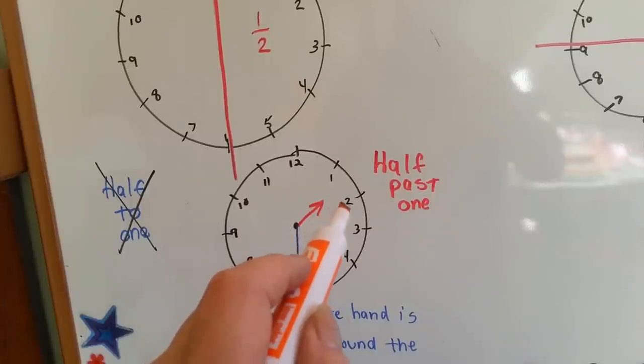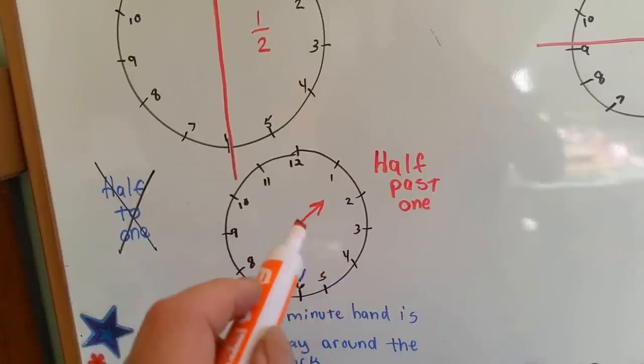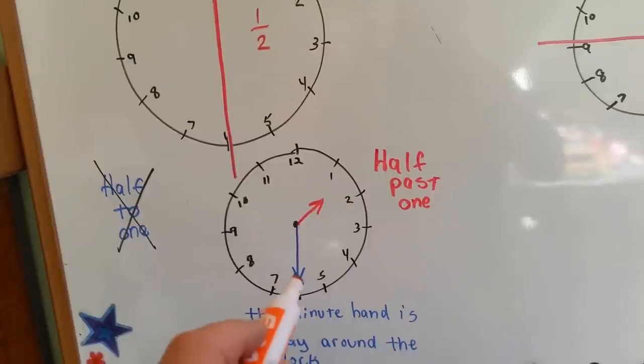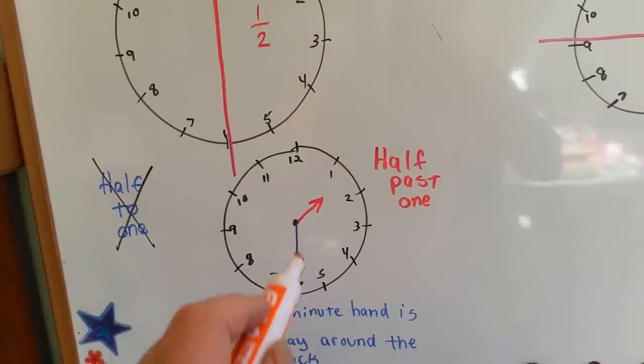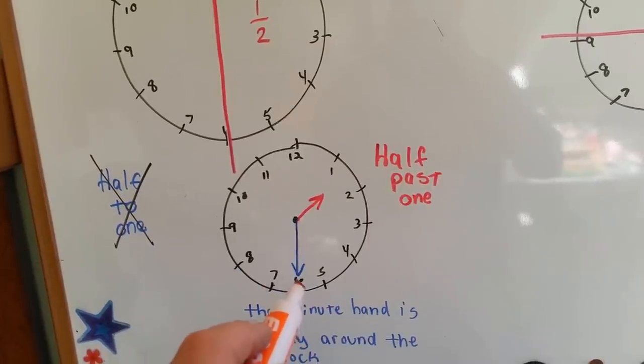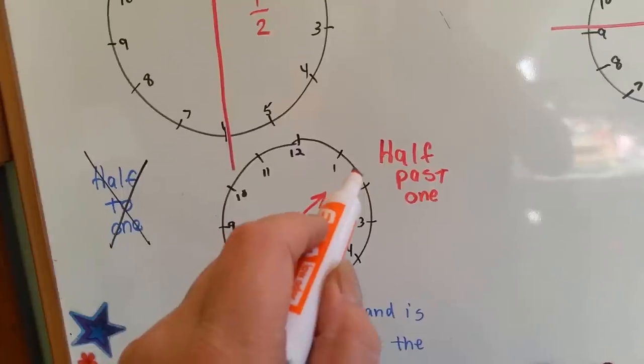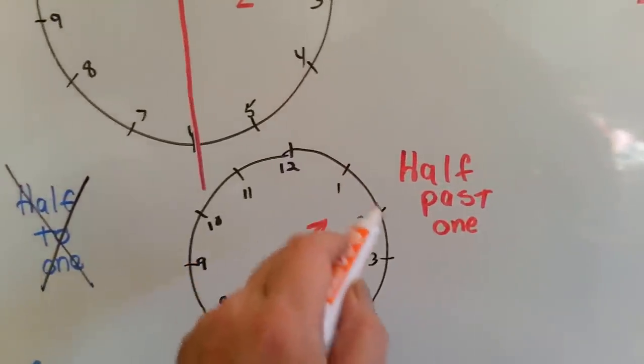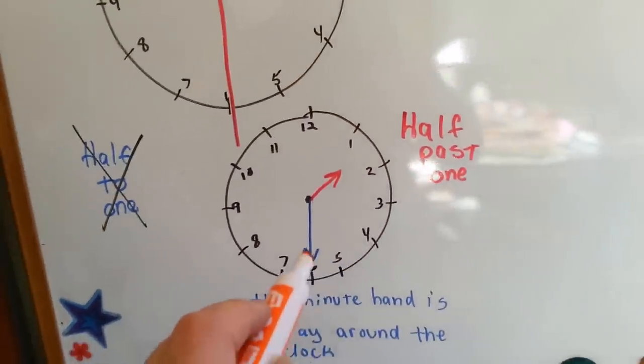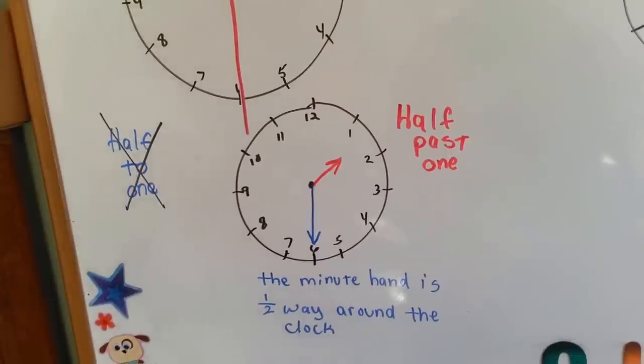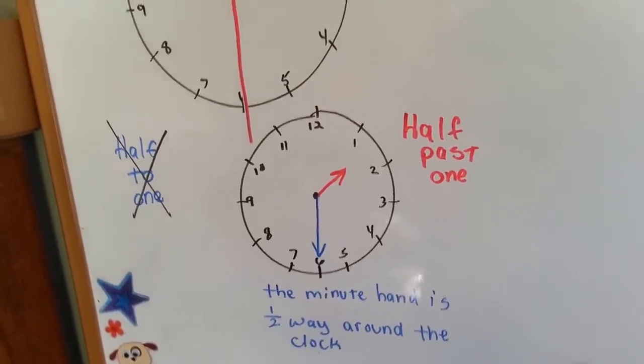It slowly moves to that next number every time the minute hand goes around. So when the minute hand is pointing to the 6, it's halfway in between 1 o'clock and 2 o'clock. So it's half-past 1. It's halfway around the clock.